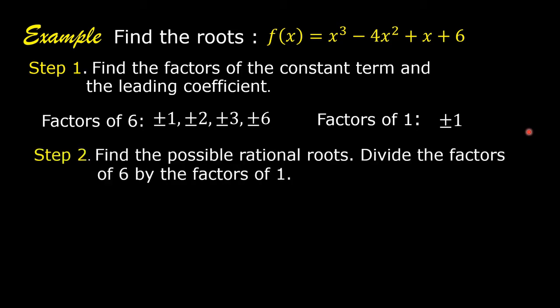Step 2: find the possible rational roots. Divide the factors of 6 by the factors of 1 — that is, divide the factors of the constant term by the factors of the leading coefficient.